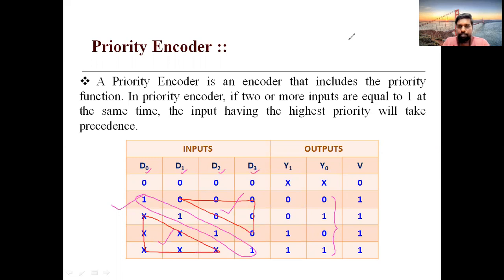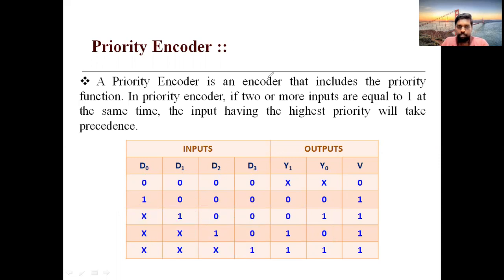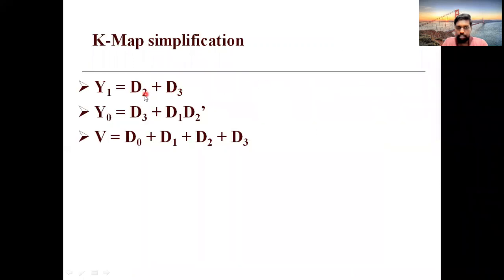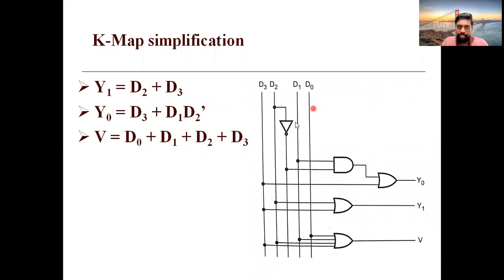By this, the concept of encoder is completed as per your syllabus. Please learn the octal-to-binary encoder and this priority encoder — the truth table is very important. Using the truth table, apply K-map simplification to get the expressions and draw the logic diagram. In the next session, we will meet with a new topic called multiplexer. If you have any doubts, you can ask or post in the comment section. Thank you and have a nice day.